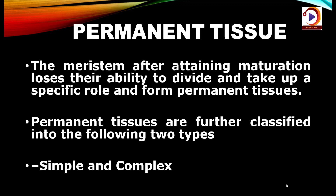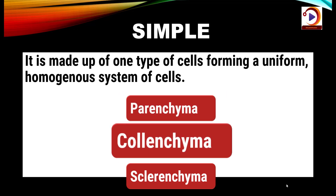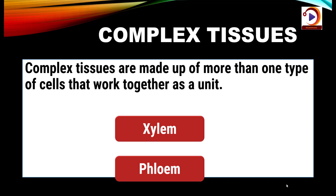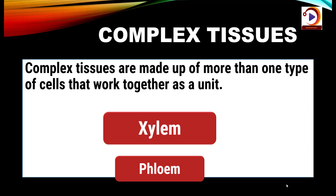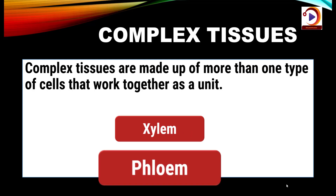Permanent tissues can be further classified into two types: simple and complex. Simple tissues are made up of one type of cells forming a uniform, homogeneous system, and they can be subdivided into parenchyma, colenchyma and sclerenchyma. Whereas complex tissues are made up of more than one type of cells that work together as a unit — examples are xylem and phloem.